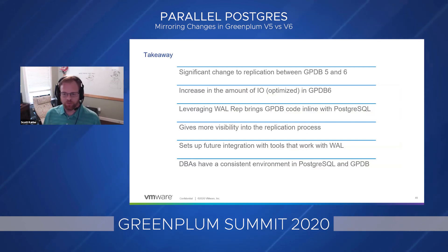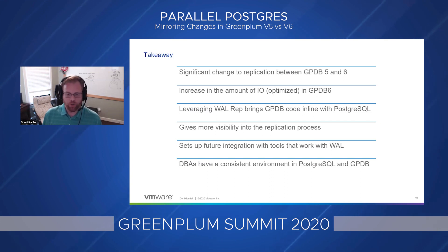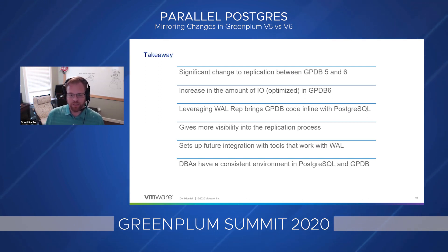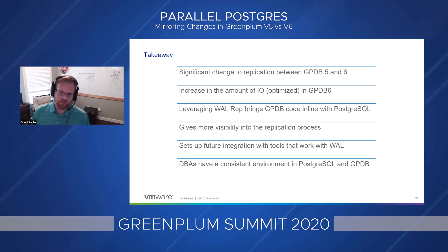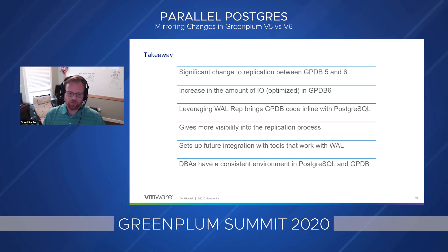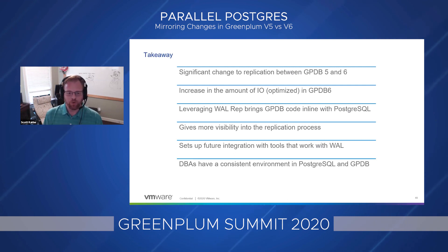There's been a big change from Greenplum 5 to Greenplum 6 in how replication works, and honestly most people are not going to notice it — but it epitomizes the amazing work the engineers are doing on Greenplum. There will be an increased amount of I/O in Greenplum 6 for replication, but it's highly optimized so most people will not notice the change. Leveraging WAL rep brings the GPDB code in line with what Postgres is doing, allowing us to get rid of file rep code and adopt all the enhancements happening in Postgres, including third-party tools for working with Postgres replication. Visibility into the replication process also improves significantly — Postgres exposes many tables and functions to monitor replication, and we can now expose all of that so you can see exactly how replication is going between primary and mirror.